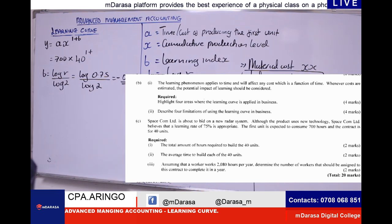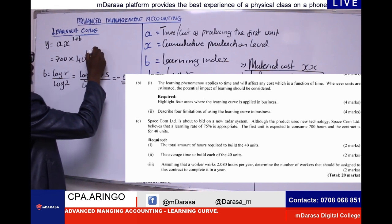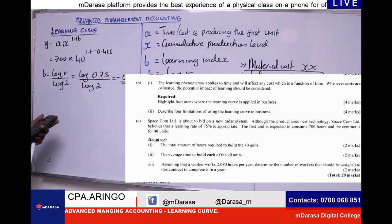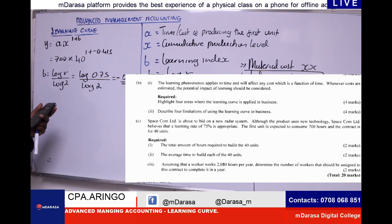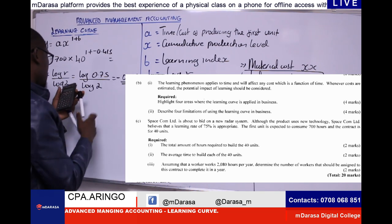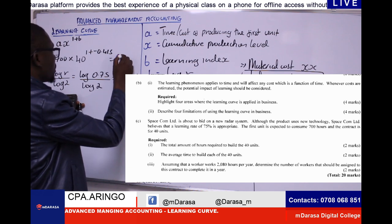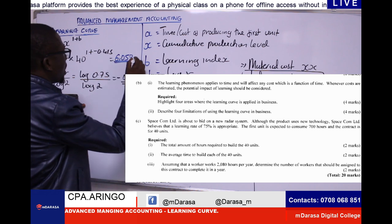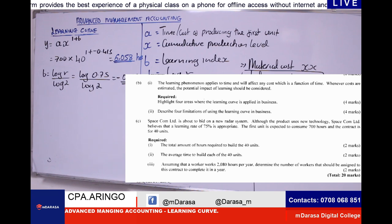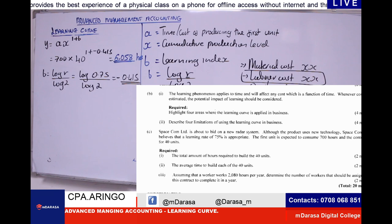Once we have B as negative 0.415, we apply the formula: 700 times 40 raised to the power of (1 plus negative 0.415). Working this out, Mwalimu is getting 6,058 hours. Please confirm with what you are getting in your books — the total hours required to build all 40 units is 6,058 hours.